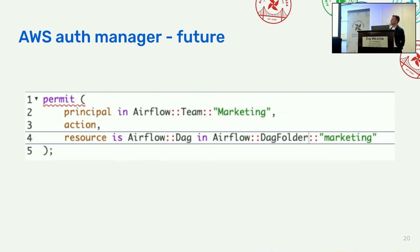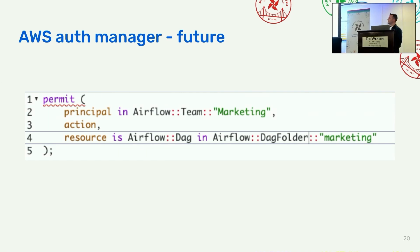As a last example — there are actually five — this one is not possible today, but it will be when Airflow becomes multi-tenant. It's an idea of what a policy could look like in a multi-team environment. Here we introduce the concept of team and DAG folder. We say if the user belongs to the team marketing, this user can do any action as long as the resource is a DAG that belongs to a specific DAG folder. By setting a simple policy like this, you can easily define permissions to groups within your Airflow environment.